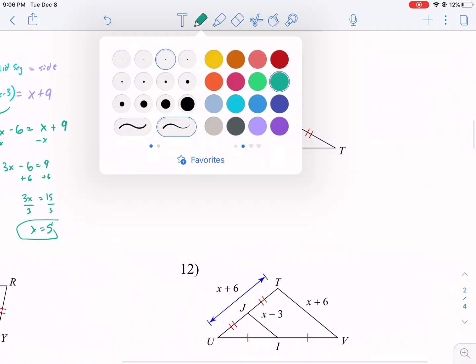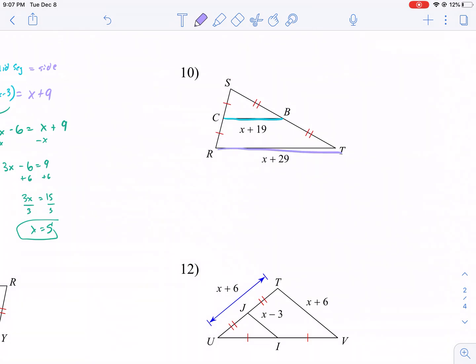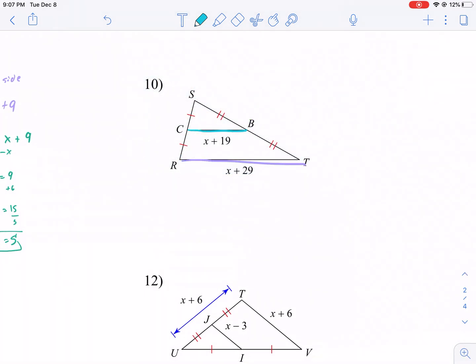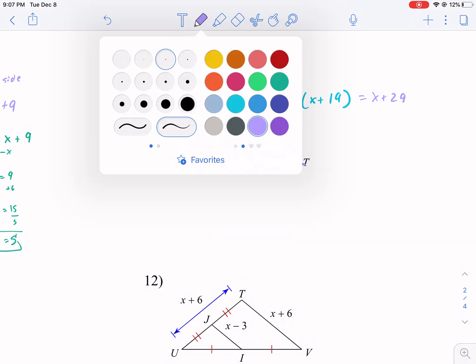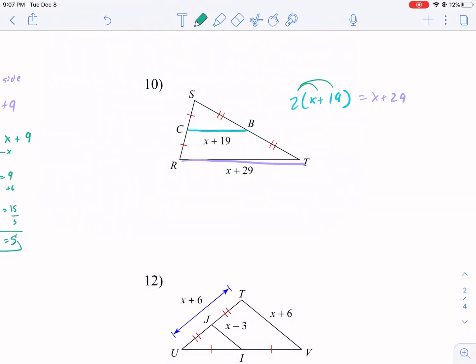So here we have the same situation. It's going to be the same old song for all these. Once you do one, you've kind of done them all. But this is good practice. So 2 times x plus 19 is going to be equal to x plus 29. And this is just algebra practice now. We're going to multiply. We get 2x plus 38 equals x plus 29. We're going to subtract x from both sides first. x plus 38 equals 29. Subtract 38 from both sides. And it looks like we're going to get x equals negative 9.